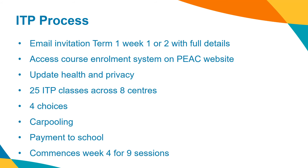The introductory course is called ITP, or Introduction to PIAC. You and your school will receive an invitation by week two of term one — please be aware this may go to spam. Full details of enrolment will be included in this invitation. The enrolment system is accessed via the PIAC website, where you can also add or update health and privacy details. In 2022, we will be running 25 ITP classes across all eight centres. Classes run once a week in a morning or afternoon session. When enrolling, you will be required to make four choices from the available options and your child will be placed in one of those four. Students wishing to carpool must make the same choices in the same order, and names must appear exactly as on our system. Payment is made to your home school. ITP commences in week four of term one and will run for nine sessions. A course outline will be provided to students in the first session. PIAC does not run in the school holidays.